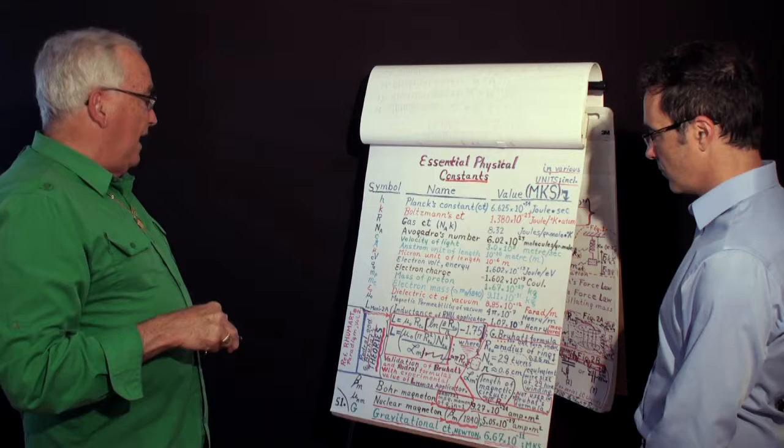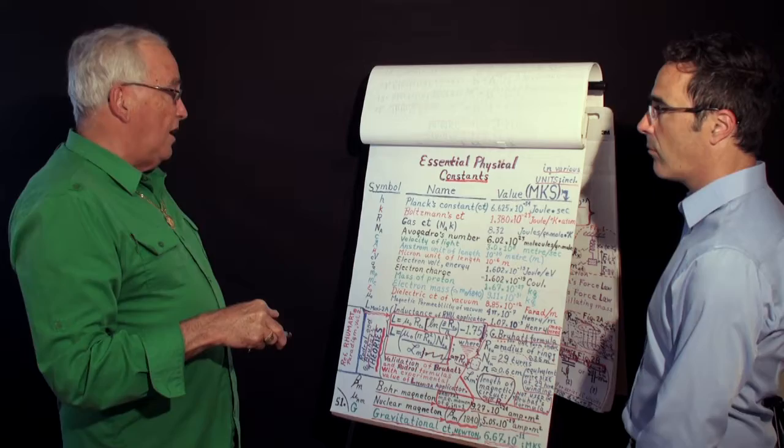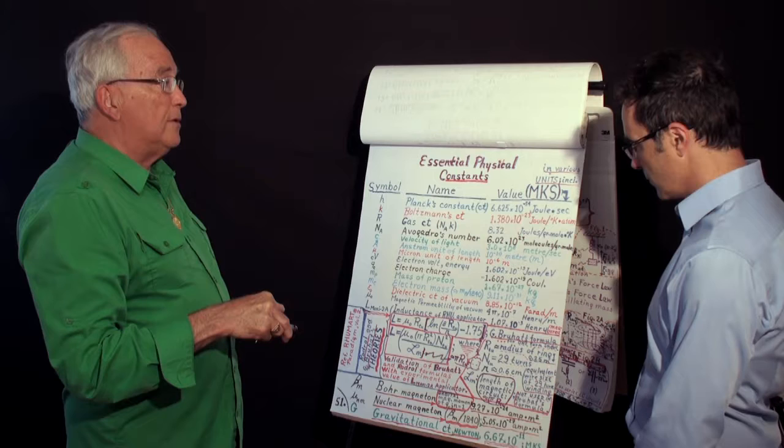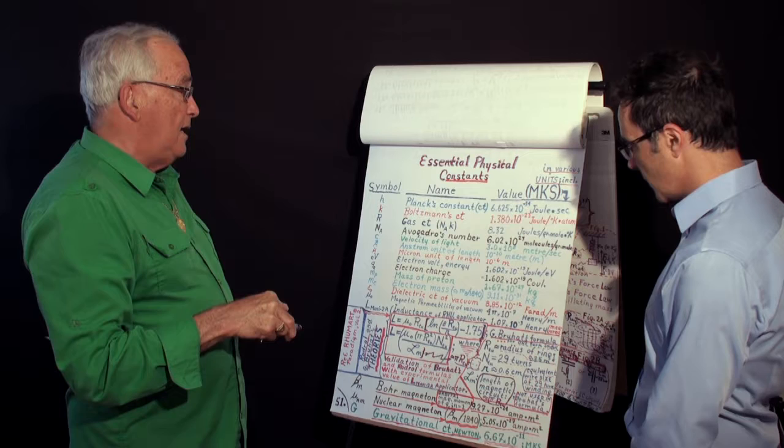I have calculated this, assuming that for the radius of one ring, MEXI 2A ring, is 0.25 meter, or 25 centimeter radius, that's a 50 centimeter diameter. Number of turn, 29 turn.